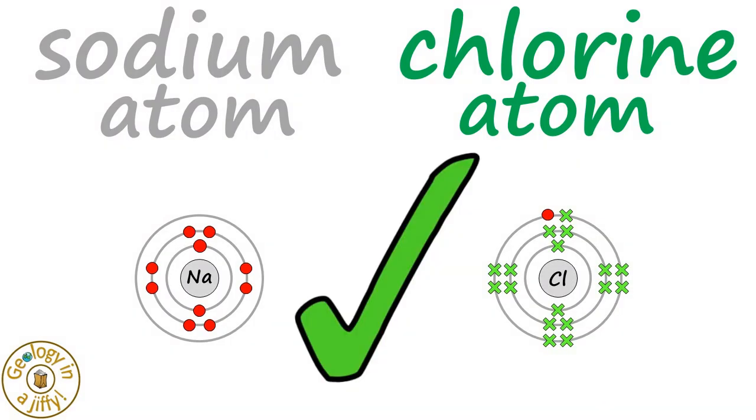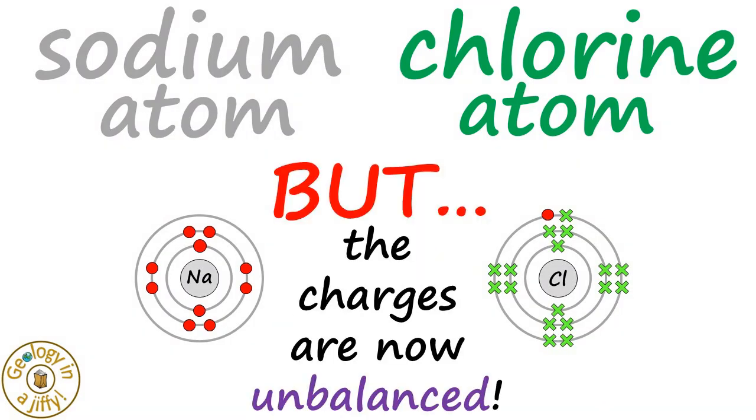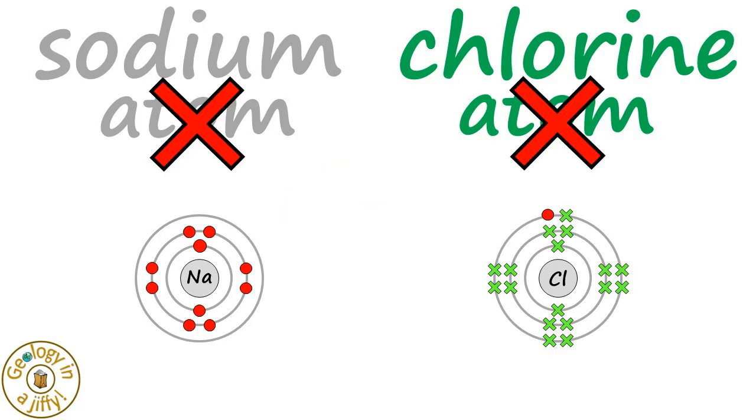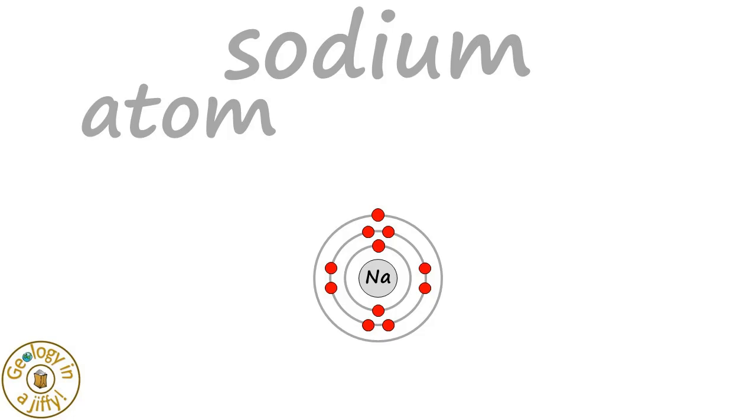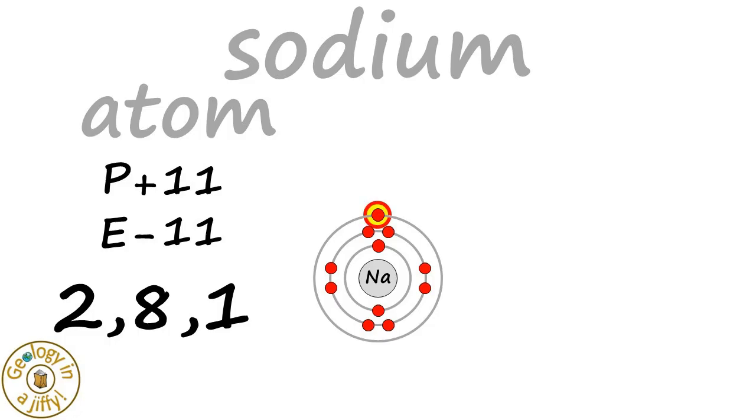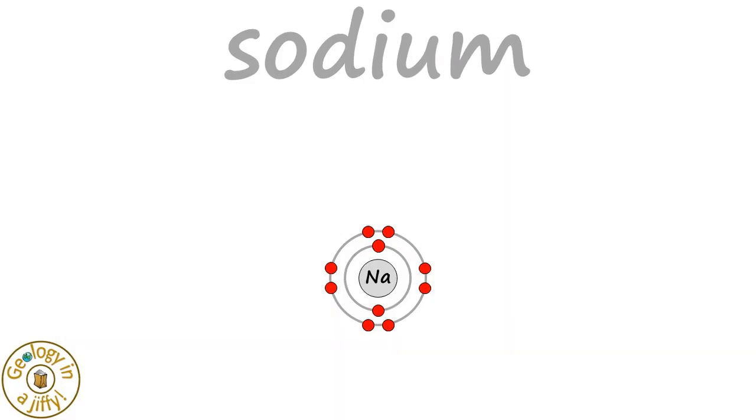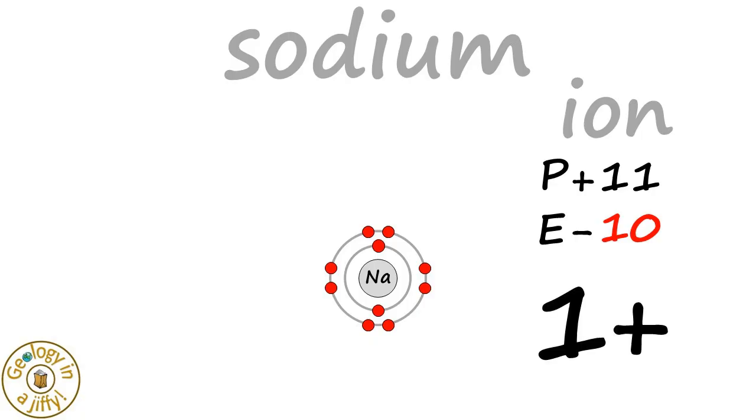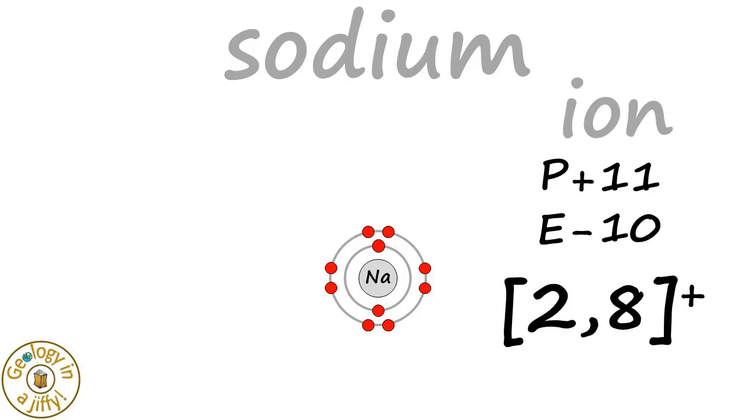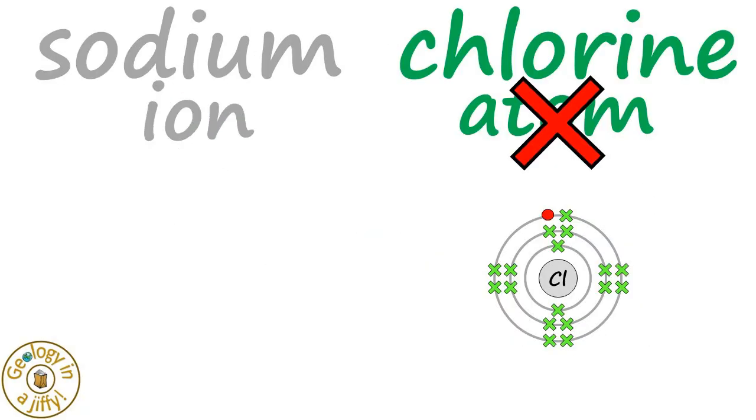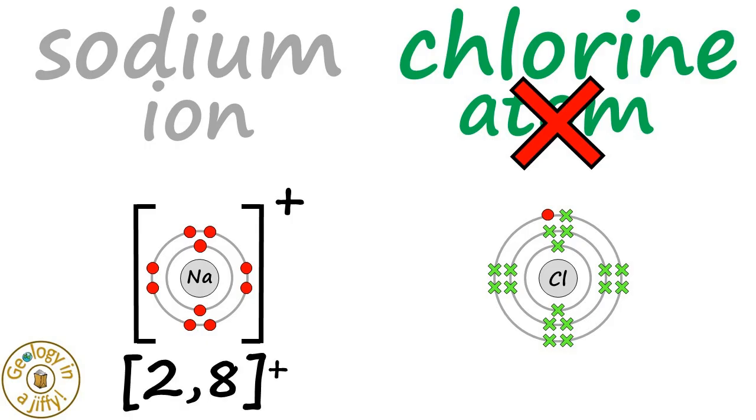Now the charges are unbalanced and they are not atoms anymore but ions. We had our sodium atom with 11 protons and 11 electrons arranged as 2, 8, 1. This electron was lost, leaving a sodium ion with 11 positives but only 10 electrons, meaning there is one extra positive charge, giving an overall ionic charge of 1+. We show this by putting brackets around the ion with a positive sign in the top corner. The sodium atom is now a sodium ion with configuration 2, 8.